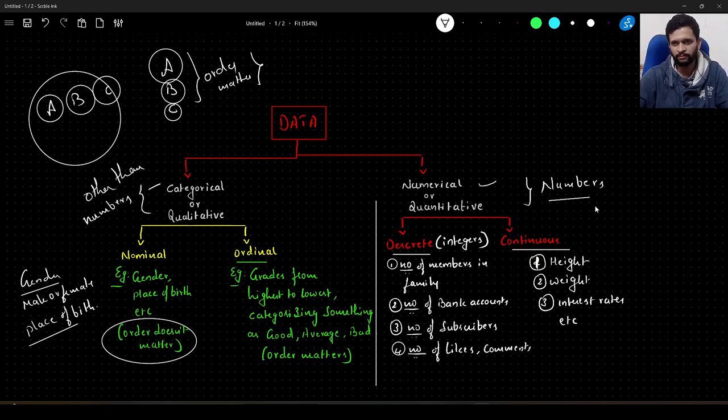Another example could be the number of bank accounts we hold, or how many subscribers we have in any YouTube channel, how many likes or comments any particular video is getting. These are all examples of discrete data. Examples of continuous data include height of a person, weight of a person, interest rates on bank accounts. These will all be classified as continuous numerical variables.